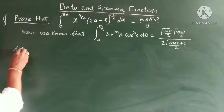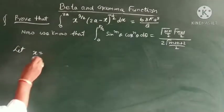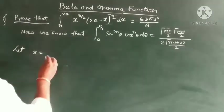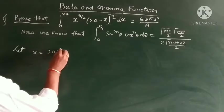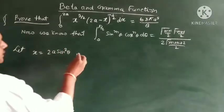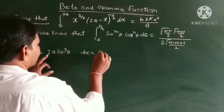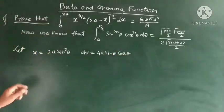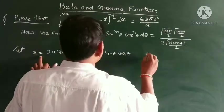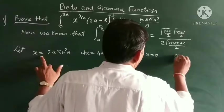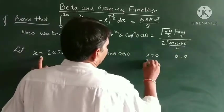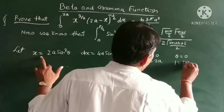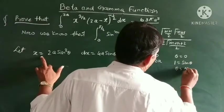Now, put the substitution x = 2a sin²θ, then dx = 4a sinθ cosθ dθ. Changing the limits: when x = 0, then θ = 0, and when x = 2a, then θ = π/2.